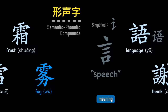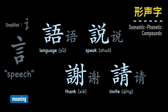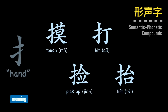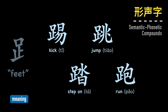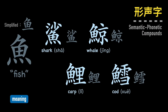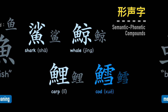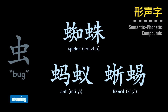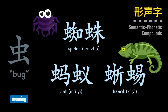A bunch of language-related words have the speech radical, like language, speak, thank, and invite. Verbs done with your hands have the hand radical, like touch, hit, pick up, and lift. Verbs done with your feet have the feet radical, like kick, jump, step on, and run. Sea animals have the fish radical, like shark, whale, carp, and cod. Insects have the bug radical — minus some incorrect classifications from our ancestors.